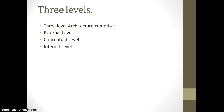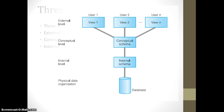Let us find out what are the three levels that constitute the three-level architecture. First we have the external level, then we have the conceptual level, and then the internal level. To understand what they have to do with database management functionalities, let's look at the diagram. Here you can see the diagram consists of external level, conceptual level, internal level, and physical data organization. The external level takes the user and their views.